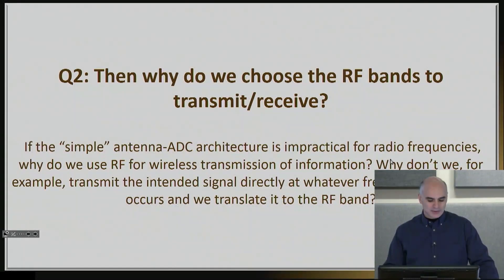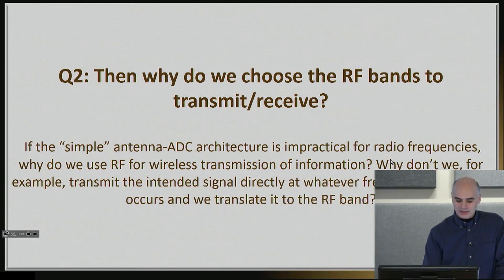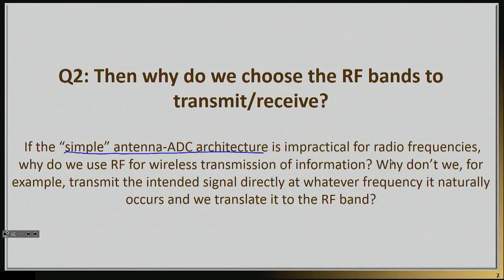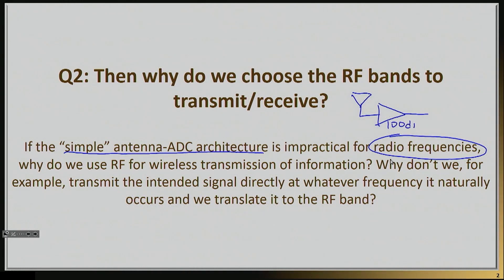Starting from where we finished last time: we understood that a simple antenna idea with an ADC architecture doesn't work very well for radio frequencies. We covered a bunch of reasons for that. One of them was that the signal you collect is so weak that you would need a 100 dB amplifier at the input at RF frequency to get the signal at the right level — and as we discussed, this is a big difficulty we can't overcome.